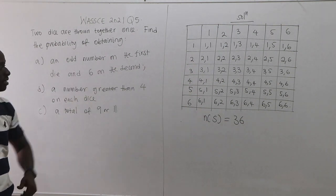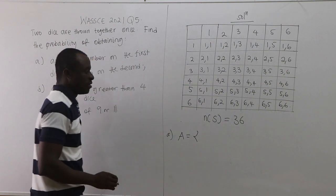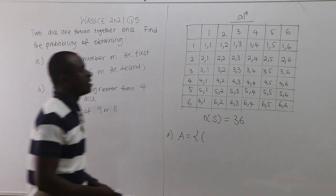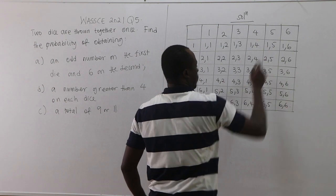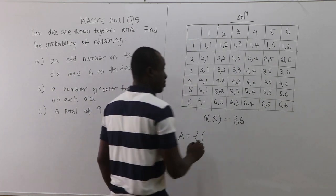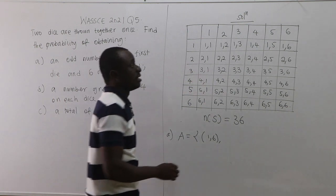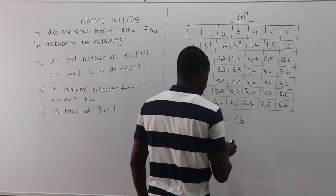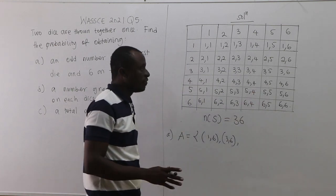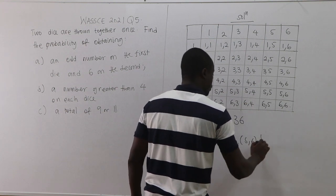For part A, if A denotes the event of an odd number on the first die and six on the second die: odd numbers on the first die are 1, 3, and 5. So the outcomes are (1,6), (3,6), and (5,6). Two is even so (2,6) is excluded; four is even so (4,6) is excluded; six is even so (6,6) is also not part of this event.